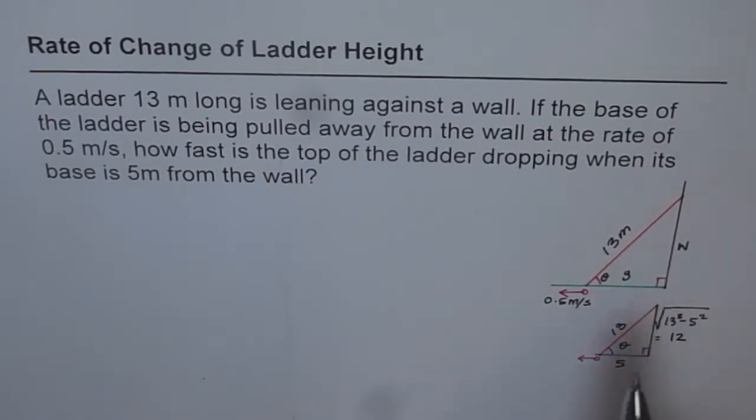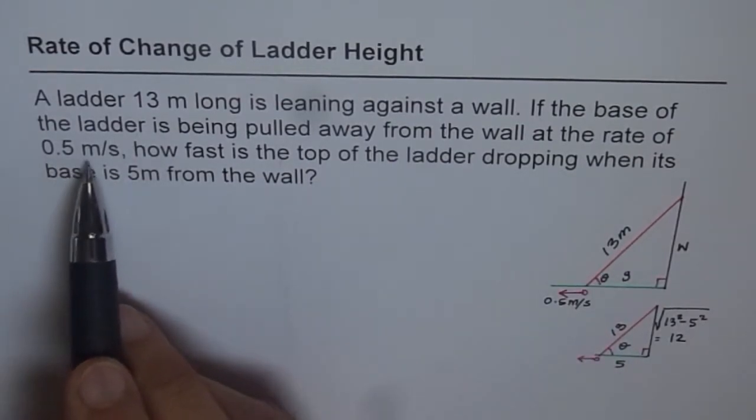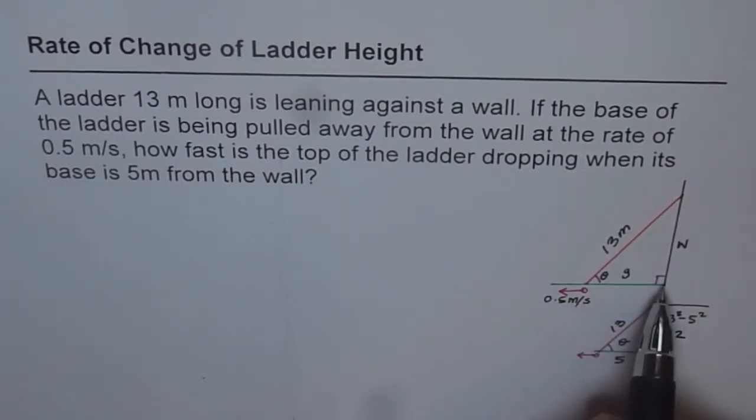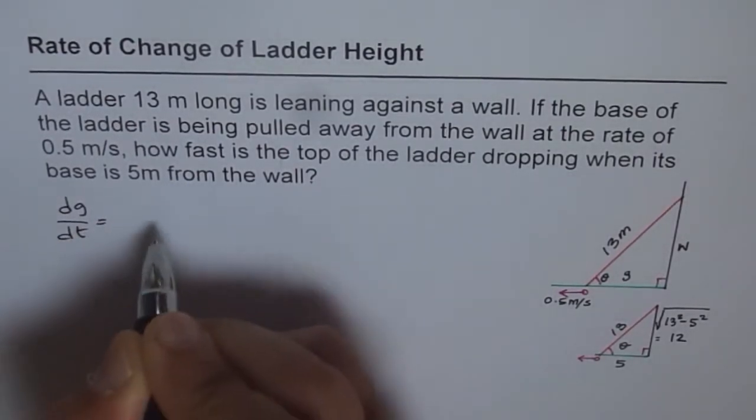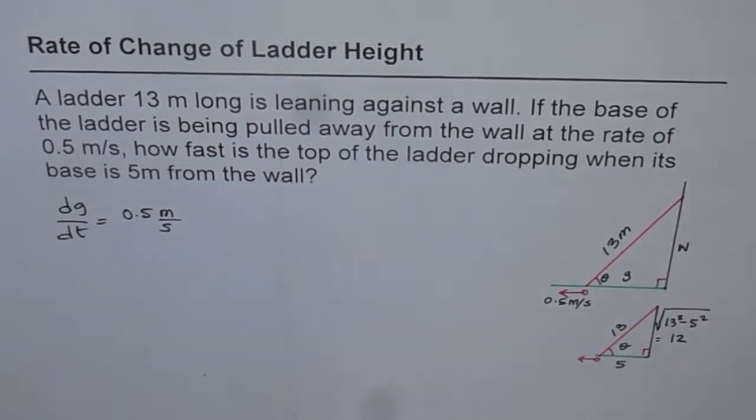Now, it is given to us that the ladder is being pulled at 0.5 meters per second. So that is the rate of change along the ground. We can write this as dG/dt equals 0.5 meters per second. That is given to us.